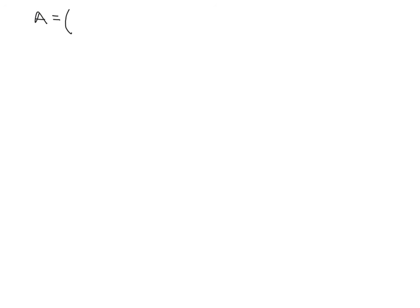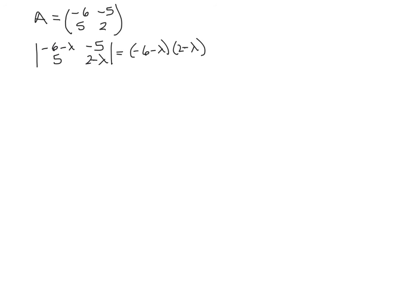Let's do one more example with complex eigenvalues. Consider the matrix A equals [[-6, -5], [5, 2]]. Finding the determinant of A minus lambda I: (negative 6 minus lambda)(2 minus lambda) minus (negative 5)(5), which gives lambda squared plus 4 lambda minus 12 plus 25, so lambda squared plus 4 lambda plus 13. That's not factorable, so we use the quadratic formula with a equals 1, b equals 4, c equals 13.